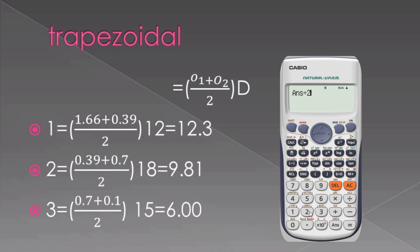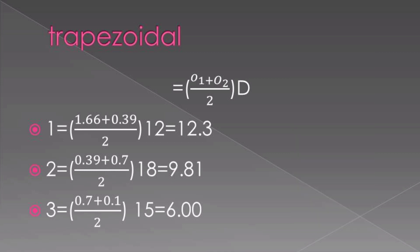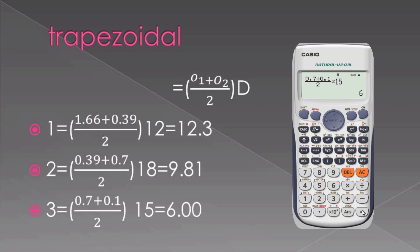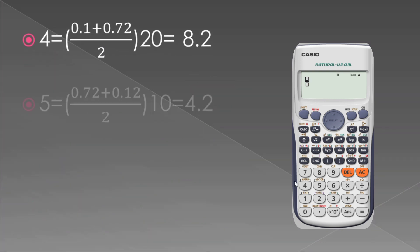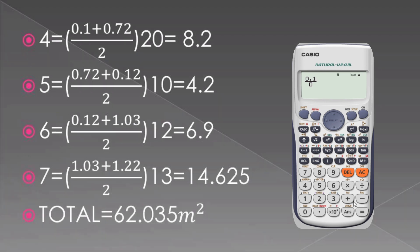The final equations: the first area that we calculate, we have the differences between the two offsets, that is 1.66 plus 0.39, I divide by 2 multiplied by 12, we get our answer 12.3. Our second area, that is 0.39 plus 0.7 divided by 2 multiplied by 18, we get 9.81. Our third area, that is 0.7 plus 0.1 over 2 multiplied by 15, we get 6. Our fourth area, that is 0.1 plus 0.72 divided by 2 multiplied by 20.